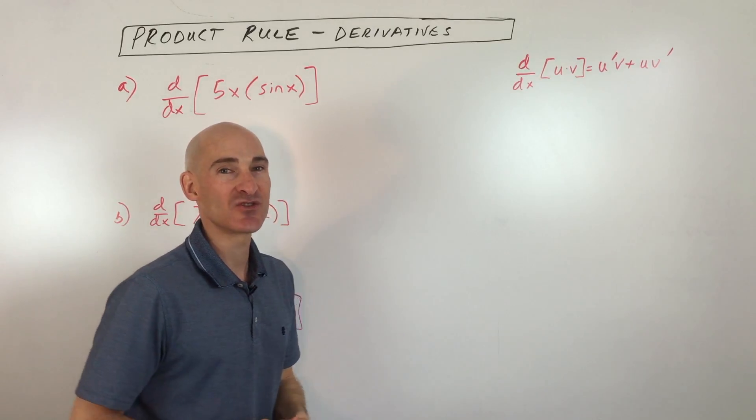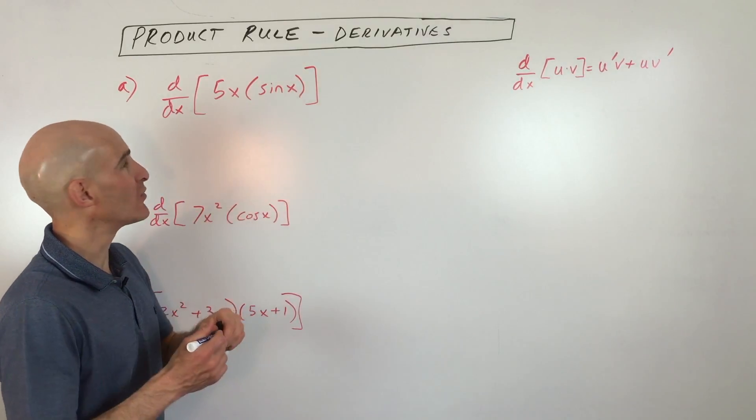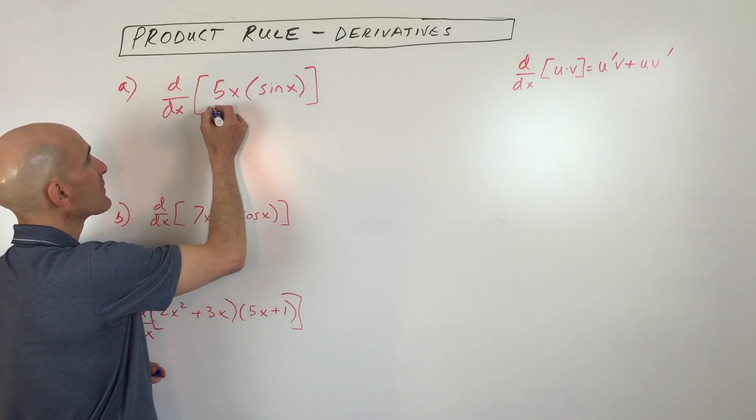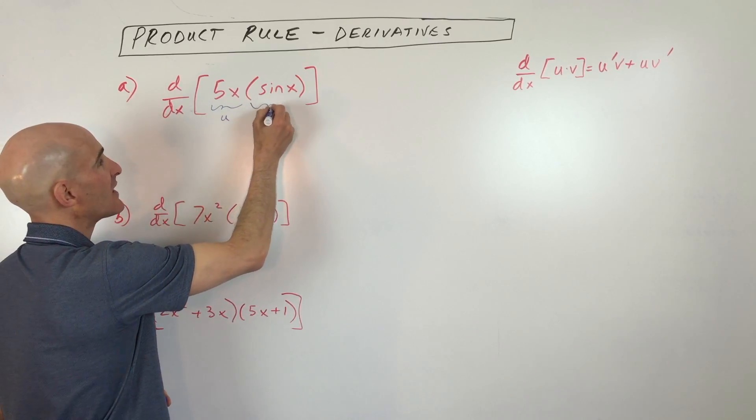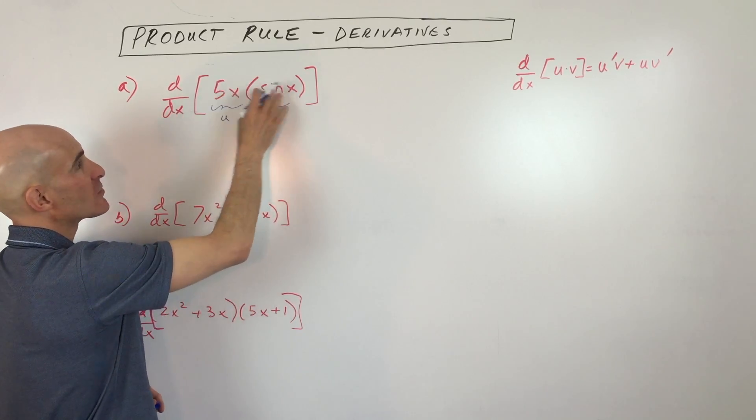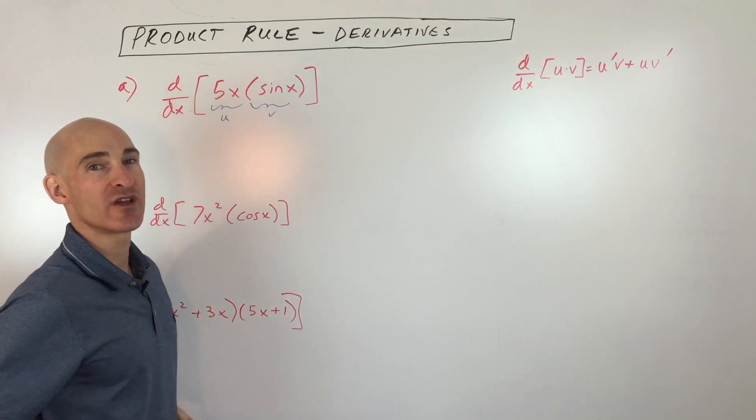Sounds complicated, but it's a lot easier in practice, so let me show you some examples. Here we're going to think of this 5x as our u, and we're going to think of this sine x as v, and you can see they're multiplied together because they're right next to each other with nothing in between.